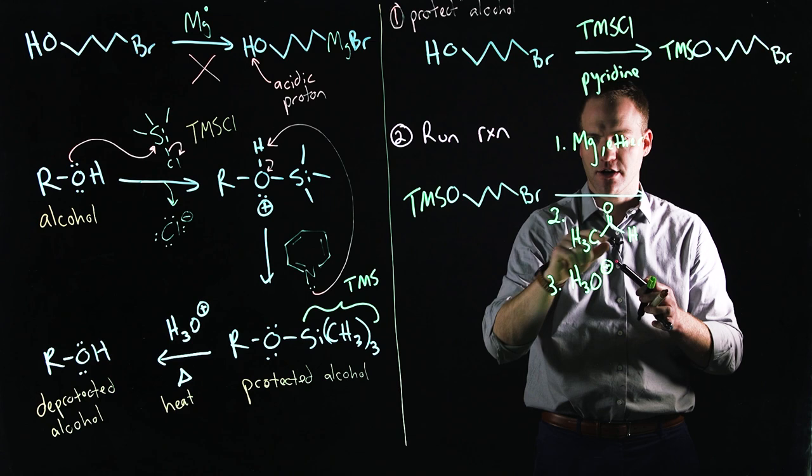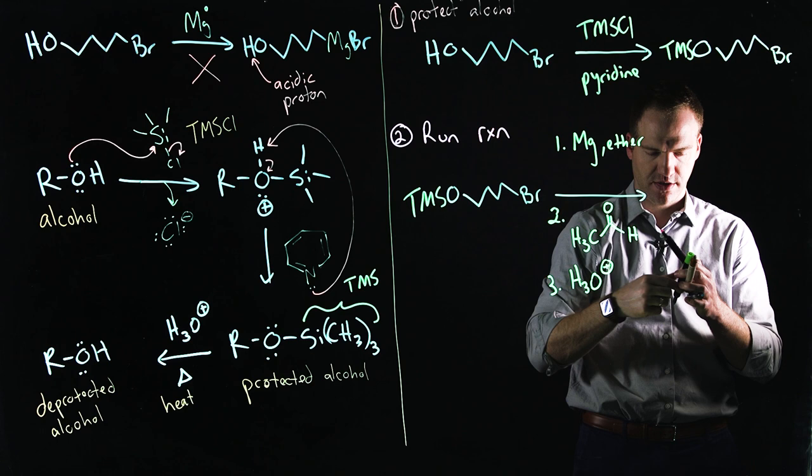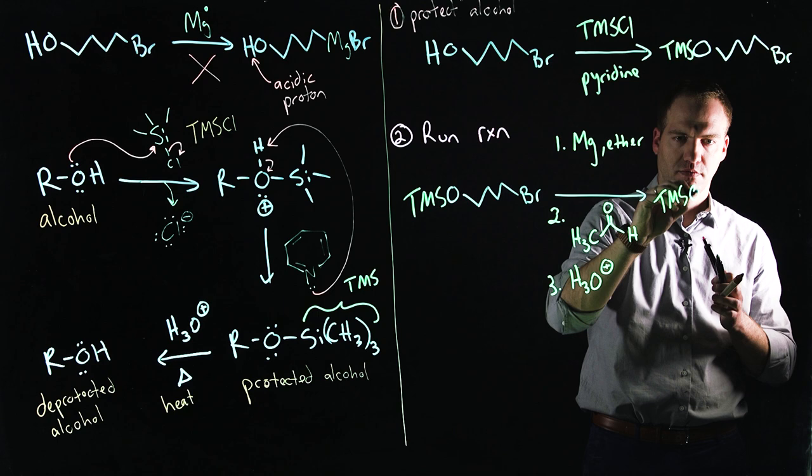The Grignard reagent is going to react with this carbon. So now I have one, two, three, four, five, six carbons in my chain. So my TMS is still hanging on over here with my oxygen.